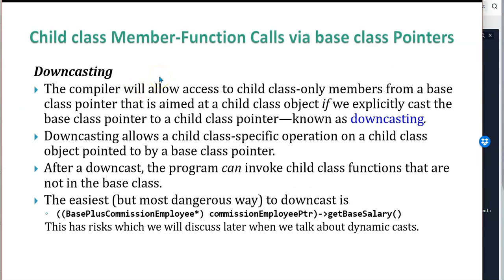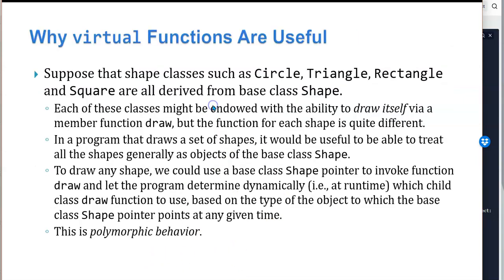There are a couple of ways to get around these issues. The only way to get to a child member function via base class pointer would be to downcast — a child pointer to a base pointer or base pointer to a child pointer. Downcasting allows the child class to-string operation on a child class object pointed to by a base class pointer. After a downcast, a program can invoke child class functions that are not in the base class. The easiest but most dangerous way to downcast is to use the original C-style casting, where you give it the class name with a pointer and cast the actual current pointer to that type. This has risks, which we'll discuss later when we talk about dynamic casts.